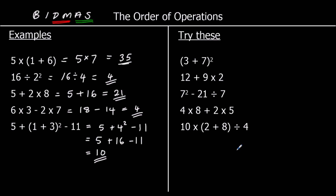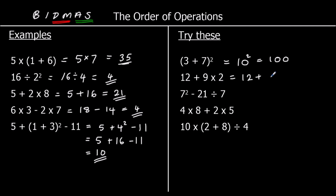Five for you to try — pause the video and have a go. For the first one we've got brackets, so we do that first: 3 plus 7 is 10. So we've got 10 squared, which is 10 times 10, which is 100. The second one: no brackets, no indices, but we've got a multiplication — multiplication comes first. 9 times 2 is 18, which means we've got 12 plus 18, which is 30.